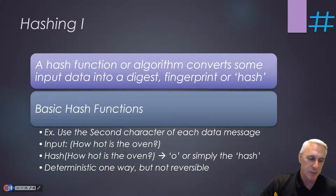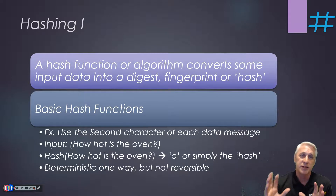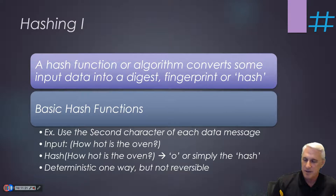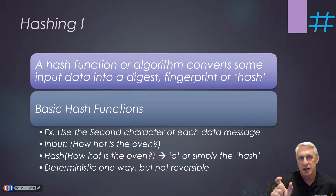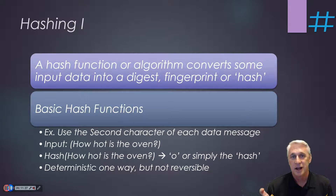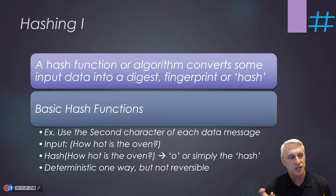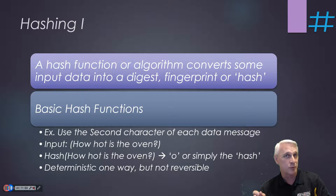Let's talk about hashing — another component critical to Bitcoin, many other cryptocurrencies, and private blockchains as well. A hash function is an algorithm that converts some input data into a digest, fingerprint, or hash. It's a unique short number that maps to anything — it could be an entire file encoded into this little number. Think of it almost like compression, but it doesn't retain all the data. Don't confuse it with compression — they're not the same thing.